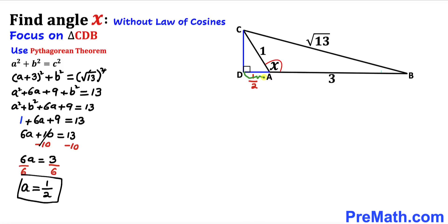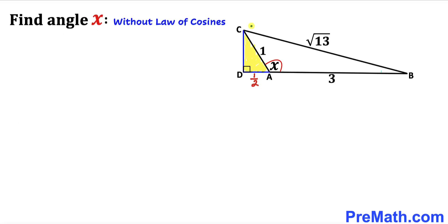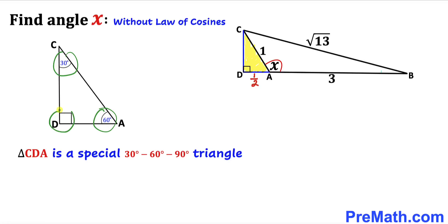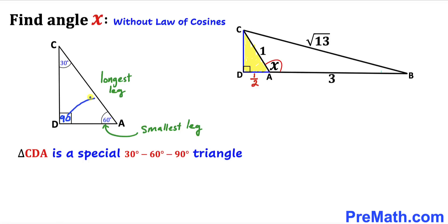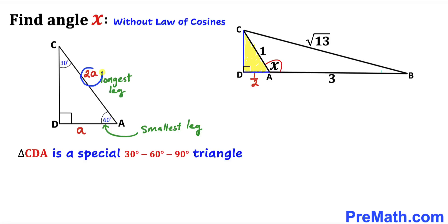So this side length DA turns out to be 1/2. Let's focus on right triangle CDA again — I have magnified this triangle CDA here. This is a special 30-60-90 triangle. The 90° is the largest angle, so the side opposite it is our largest leg. The 30° is the smallest angle, and in a 30-60-90 triangle the longest leg is always twice the smallest leg. Our smallest leg is 1/2 and our longest leg is 1, so we conclude that angle DAC is 60°.